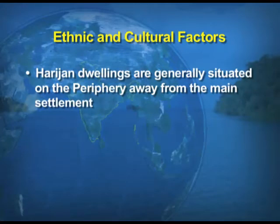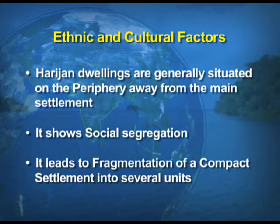Harijan dwellings are generally situated on the periphery, away from the main settlement, as these people of lower caste provide services to the upper-class people of rural areas. This shows social segregation, and it leads to fragmentation of a compact settlement into several units — the compact settlement gets dispersed into different dwellings based on social segregation.